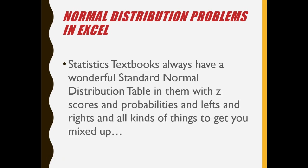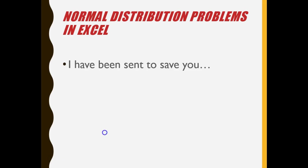Statistics textbooks always have a wonderful standard normal distribution table in them with z-scores and probabilities and all kinds of instructions on how to find the probability to the left, how to find the probability to the right, what you've got to subtract to get the probability in the middle, all kinds of rules that generally get you mixed up. I have been sent to save you.